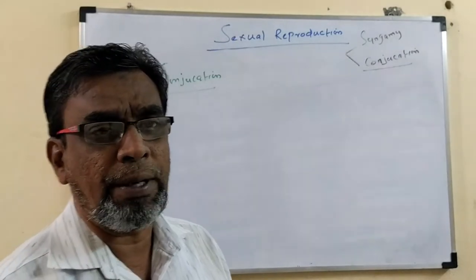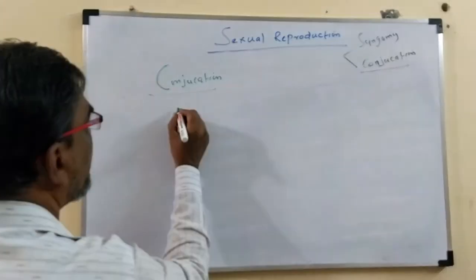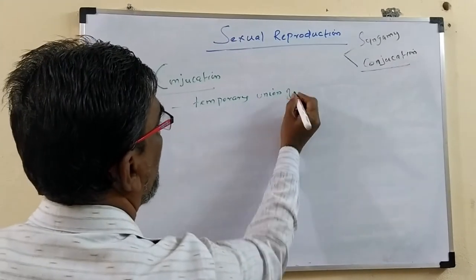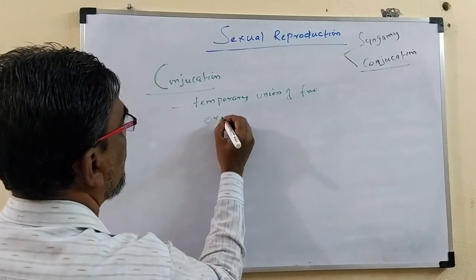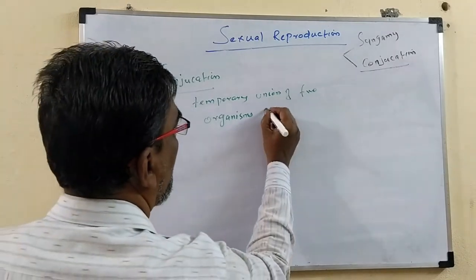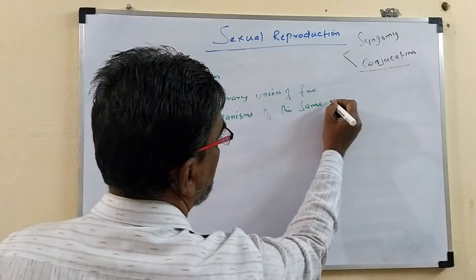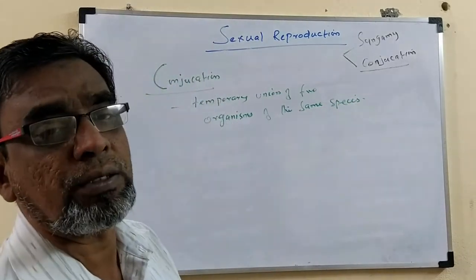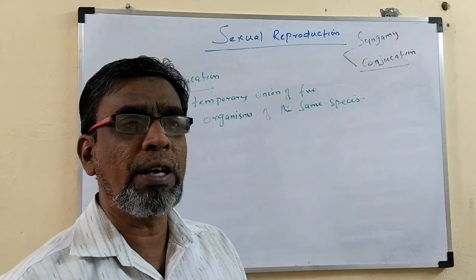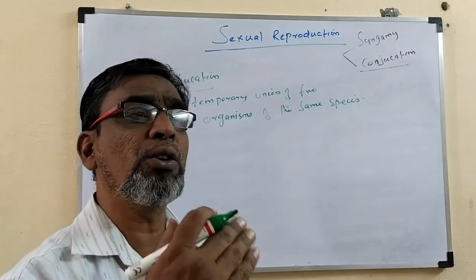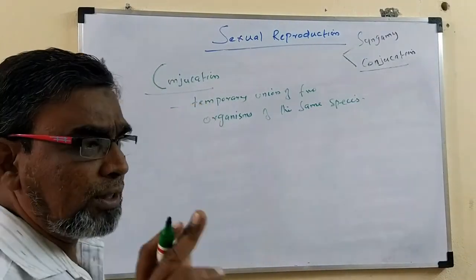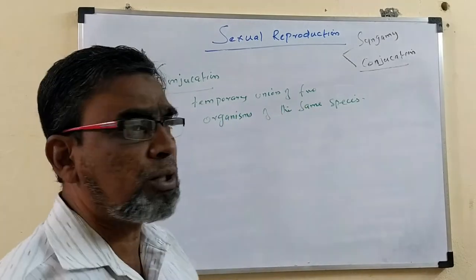During conjugation, it is a temporary union of two organisms of the same species — between two bacteria. One bacteria is the donor and one bacteria is the recipient. So, one bacteria gives the genetic material to the other bacteria. One who gives is the donor, and one who receives is the recipient. Conjugation is a temporary union of two organisms of the same species.